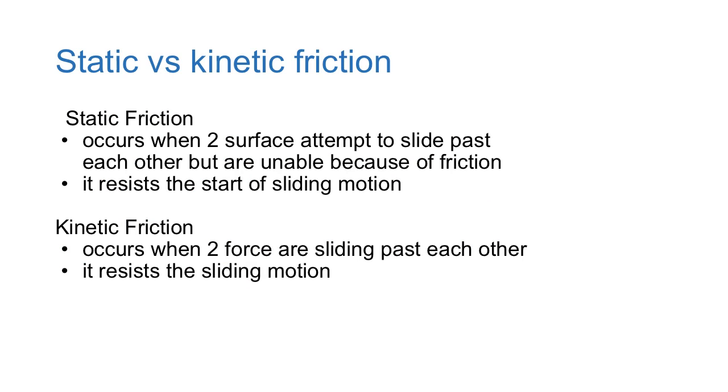So there's two main types of friction we're gonna talk about in this class: static and kinetic. You can kind of see the root of these words - static essentially means stationary, kinetic is motion. So let's look at static first.